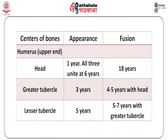Looking at the humerus, the upper and lower ends have different ossification processes. At the upper end, the center for the head appears at one year and fuses at 18 years. The ossification center for the greater tubercle appears at three years and fuses with the head at four to five years. The center for the lesser tubercle appears at five years. All three centers — head, greater tubercle, and lesser tubercle — unite with each other at six years.